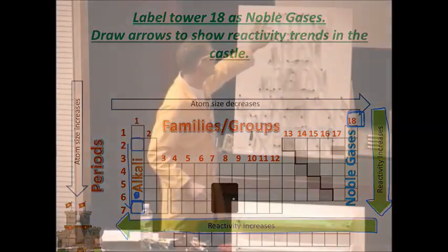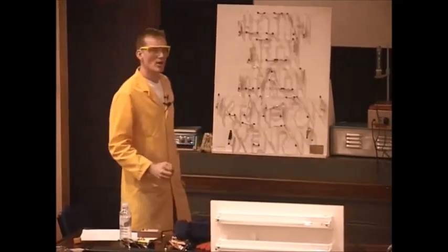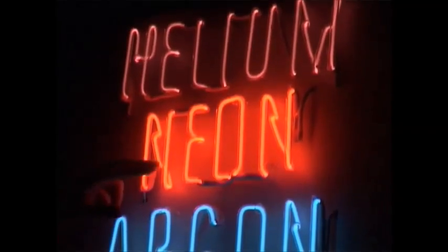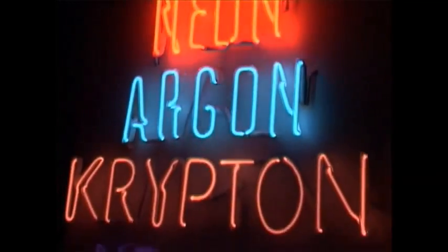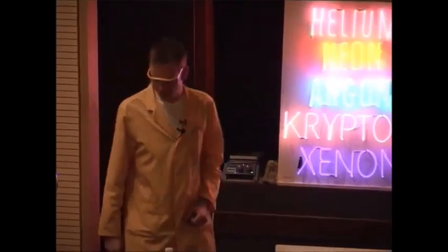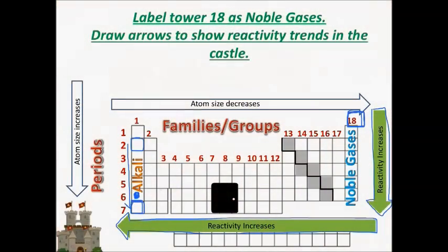The noble gases are colorless gases in glass tubes, but if we apply a voltage across them, they all light up with their characteristic colors. You have helium at the top, then neon — this bright sign is what we see in advertisements — then argon, krypton, and xenon. Each of these gases gives a very different color.